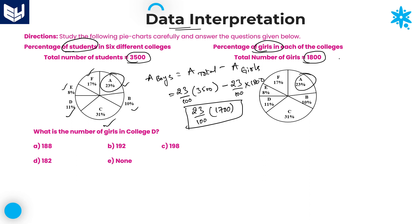When you are calculating the number of boys in any college, whenever two diagrams have equal percentages, directly take the difference between 3,500 and 1,800. You will get 1,700 — this 1,700 is the total number of boys. For college A boys: 23% of 1,700. College B: 10% of 1,700. College C: 31%, and so on.